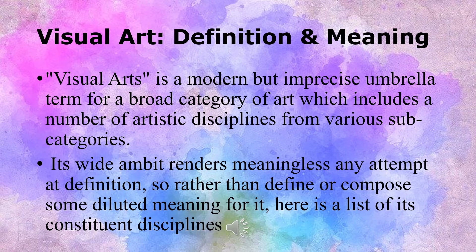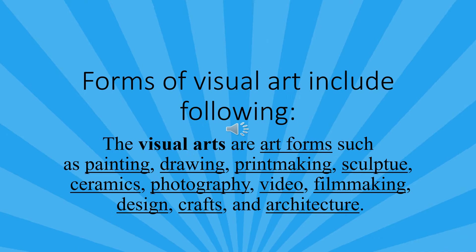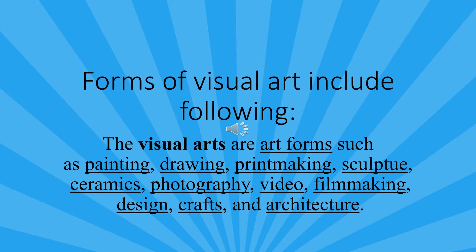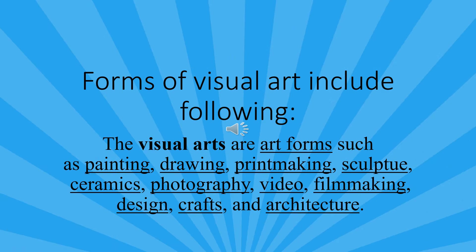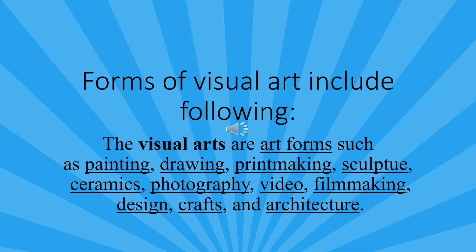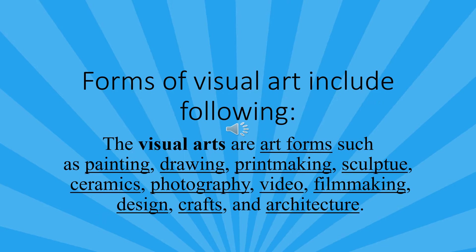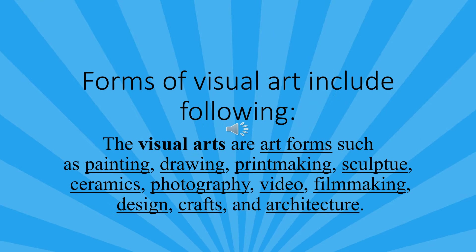There is no particular definition of Visual Art. But research scholars and many established artists define Visual Art as a modern but imprecise umbrella term for a broad category of art which includes a number of artistic disciplines from various subcategories. The visual arts include art forms such as Paintings, Drawings, Printmaking, Sculpture, Ceramics, Photography, Video, Filmmaking, Design, Crafts and Architecture. Many artistic disciplines such as Performing Arts, Conceptual Art and Textile Arts also involve aspects of Visual Arts.